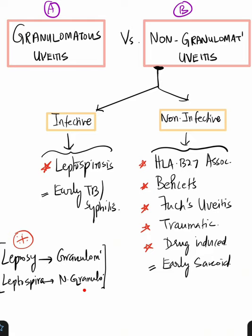The non-infective non-granulomatous conditions are HLA-B27 associated ankylosing spondylitis, Behçet's disease, Fuchs uveitis, traumatic uveitis, and drug-induced uveitis.